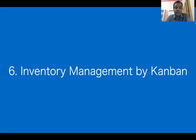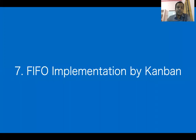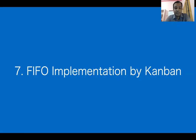So how this inventory management can be done by Kanban and how you can reduce the inventory cost. The seventh thing we will be focusing on is implementation of first-in-first-out (FIFO) by Kanban. FIFO is one of the major systems that manufacturing companies try to implement — sometimes successfully and sometimes not. We will be discussing with examples and simulations how Kanban will help you to implement FIFO.